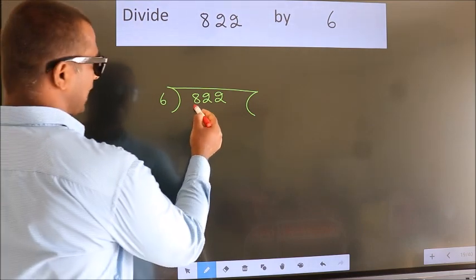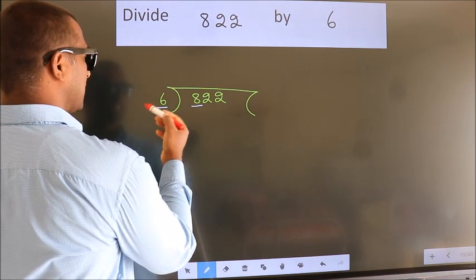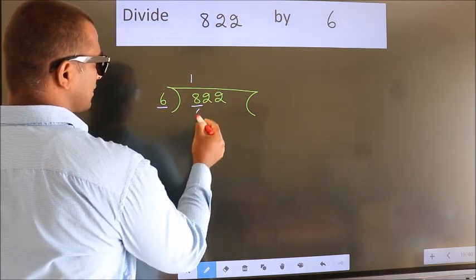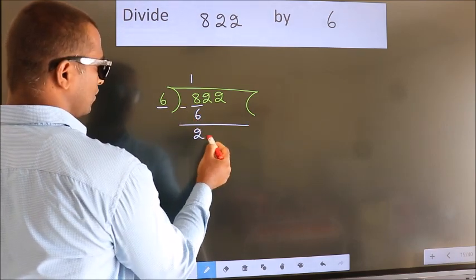Here we have 8, here 6. A number close to 8 in 6 table is 6 once 6. Now, we should subtract. We get 2.